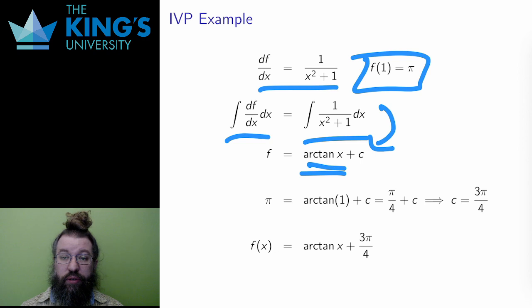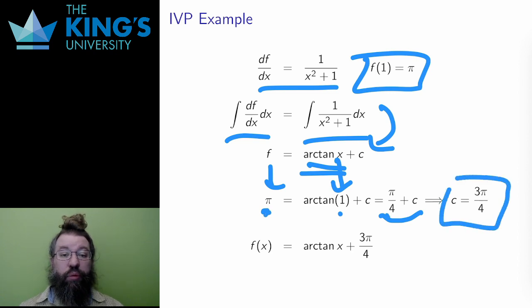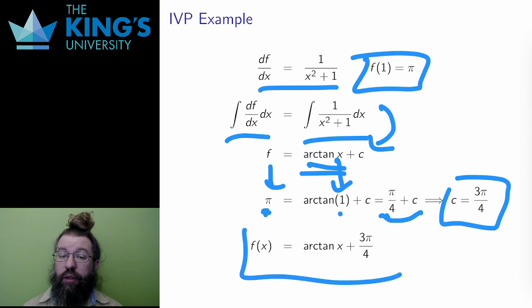Then I use the initial conditions. When x equals 1, f equals pi. So I put x equals 1 and f equals pi into the equation. On the left, I get pi. And on the right, arctangent of 1. Well, the arctangent of 1 is pi over 4, so I subtract pi over 4 from both sides, and I conclude that c must be 3 pi over 4. This means that a unique solution to this IVP is f of x equals arctangent of x plus 3 pi over 4.